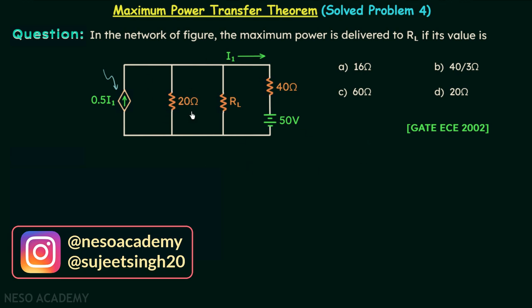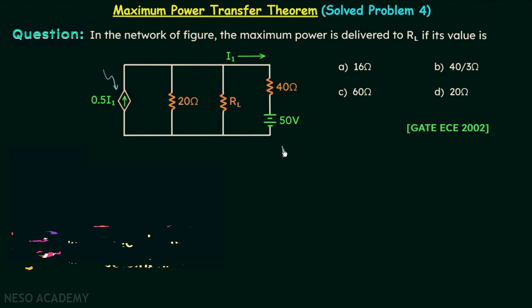Moving on to the network, we have this branch with our load resistance. Following the question, we will find the value of RL for which maximum power is transferred to it. We know from Maximum Power Transfer Theorem that when RL equals the Thevenin's equivalent resistance of the network, maximum power is transferred. So we simply need to find Rth of this network.